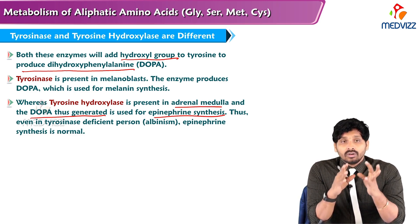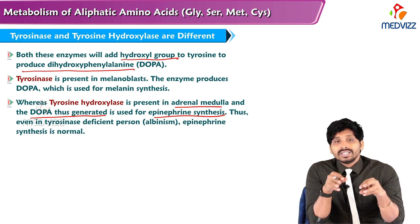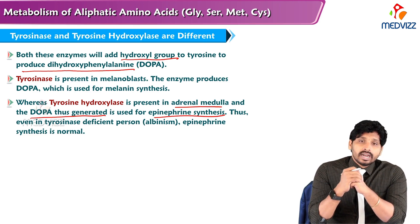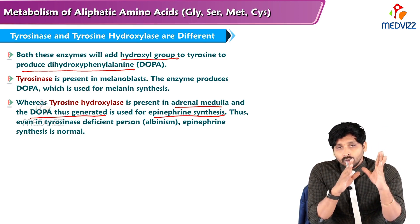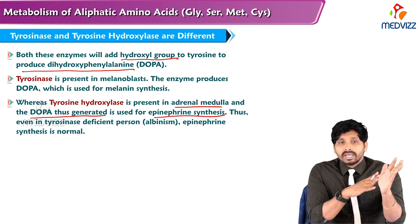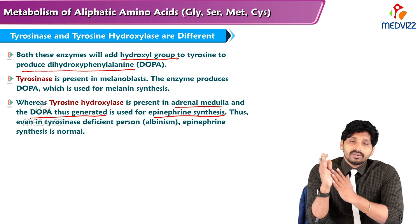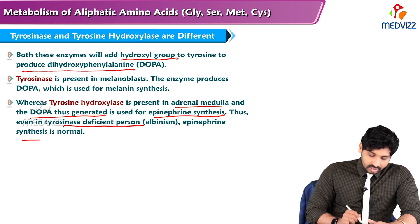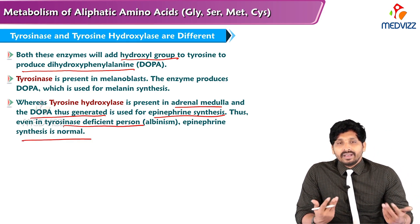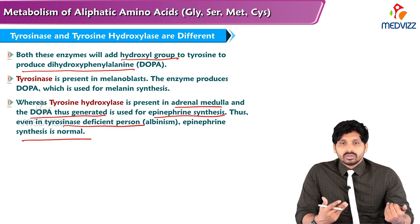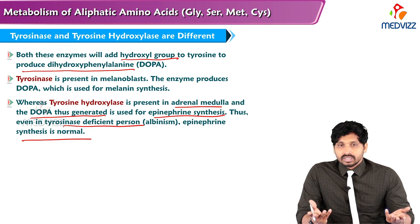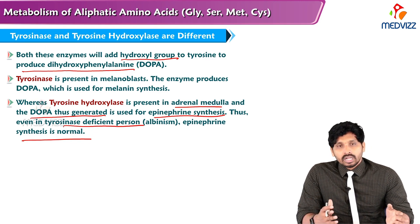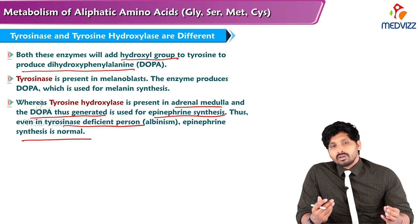Tyrosine hydroxylase is present in the adrenal medulla, and the DOPA it generates is used for epinephrine synthesis. So the function of tyrosinase and tyrosine hydroxylase is the same, but their locations differ. In a tyrosinase-deficient person with albinism, epinephrine synthesis remains normal because dopamine hydroxylase in the adrenal medulla is unaffected — that person can still synthesize epinephrine and norepinephrine in normal quantities.